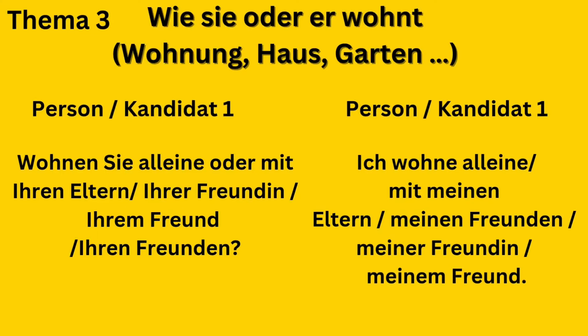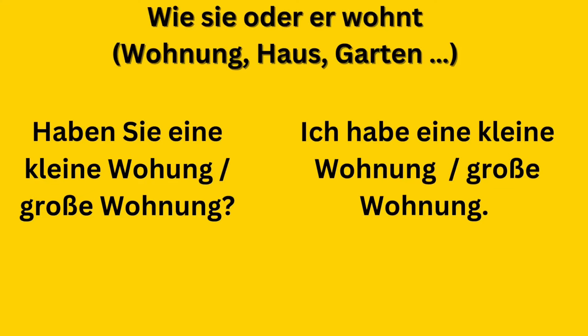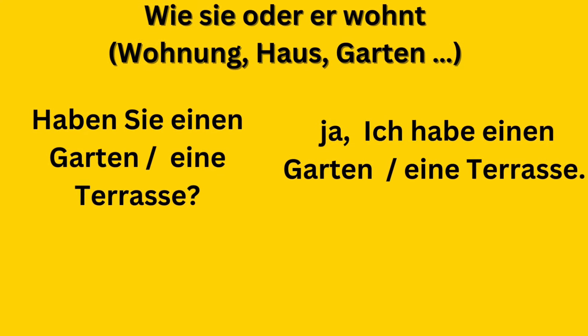For Theme 3 (Wie wohnen Sie), you can also add extra points. You can ask: Wohnen Sie alleine oder mit Ihren Eltern, Ihrer Freundin, Ihrem Freund? Answers: Ich wohne alleine, Ich wohne mit meinen Eltern, Ich wohne mit meinen Freunden. You can also ask: Haben Sie eine kleine Wohnung oder eine große Wohnung? Answer: Ich habe eine kleine Wohnung or Ich habe eine große Wohnung.